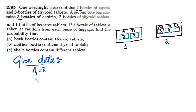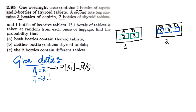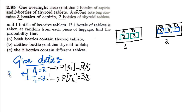So A1 equals two and T1 equals three. On the basis of this we can find their probabilities. The probability of A1 is the number of aspirin bottles in bag one divided by the total number of bottles — two plus three is five — so P(A1) equals 2/5. Similarly, the probability of T1 is 3/5.